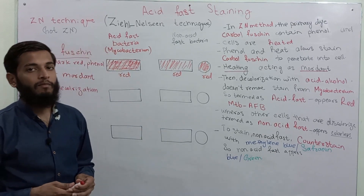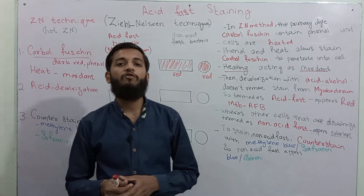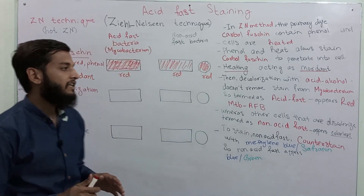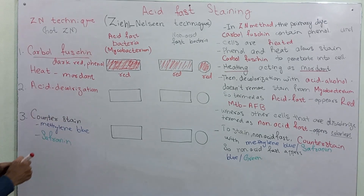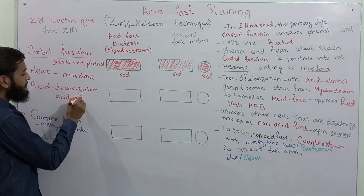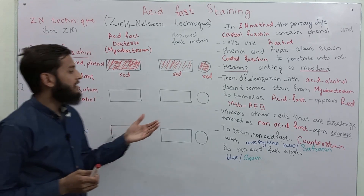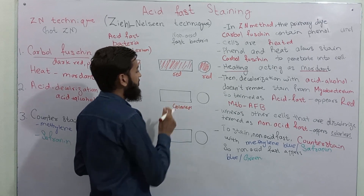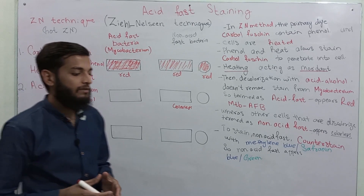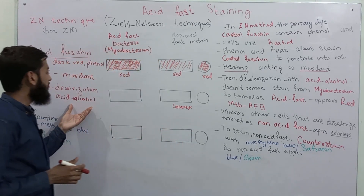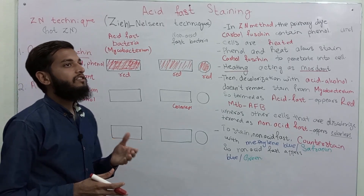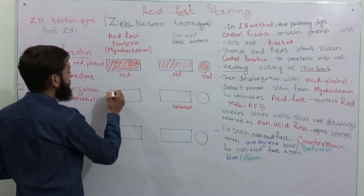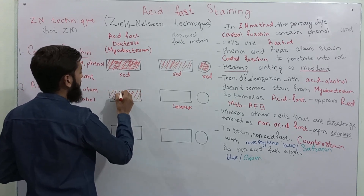In the second step of Ziehl-Neelsen staining method we apply an acid decolorizer. In Gram staining we applied a decolorizing solution composed of acetone, alcohol, or a combination of both, but in Ziehl-Neelsen staining method we apply an acid decolorizer composed of acid and alcohol. All cells that are decolorized by the acid decolorizer will become colorless and are termed non-acid fast bacteria. However, Mycobacterium species will resist this decolorization step — we call them acid fast. We call this property acid fastness. Mycobacterium species will still appear red in color.